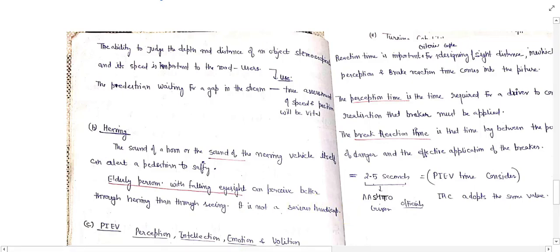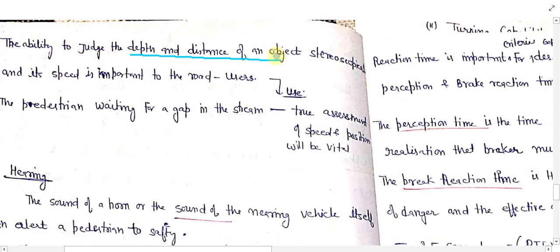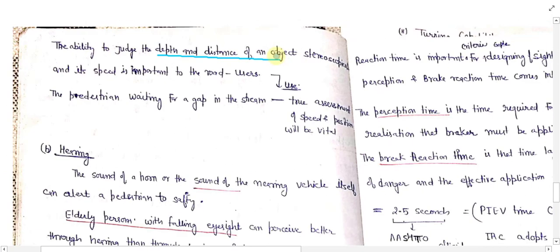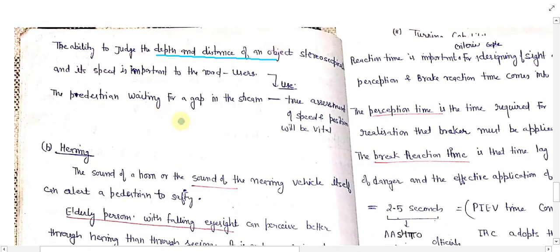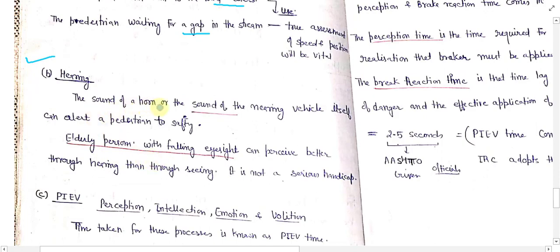Another property of vision is the ability to judge the depth and distance of an object, which is known as stereoscopic vision. The stereoscopic perception of an object and its speed is important to road users — it is used to predict the gap inside a traffic stream, for example for pedestrians crossing the road.